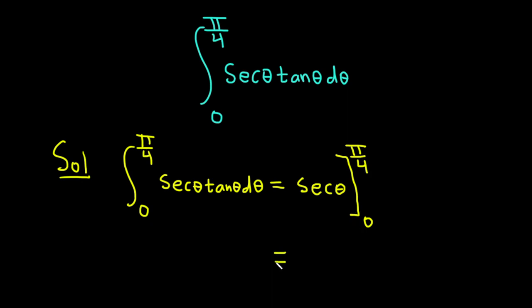You always plug in the top number first. So this is the secant of pi over 4, and then you put a minus sign and then it's the secant of 0.